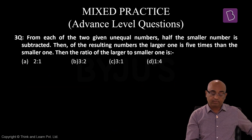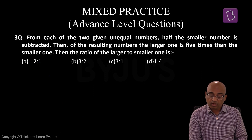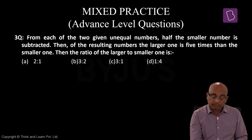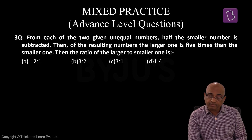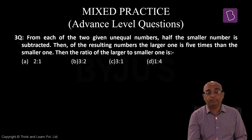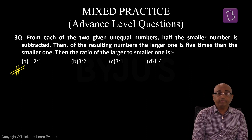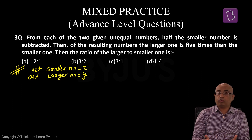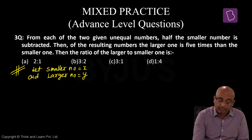Question 3: From each of the two given unequal numbers, half the smaller number is subtracted. The larger result is 5 times the smaller result. Find the ratio of the larger to smaller number. Let smaller number = X and larger number = Y. Half the smaller number is X by 2. From both numbers we subtract X by 2. After subtraction: larger becomes Y minus X by 2, and smaller becomes X minus X by 2 = X by 2।